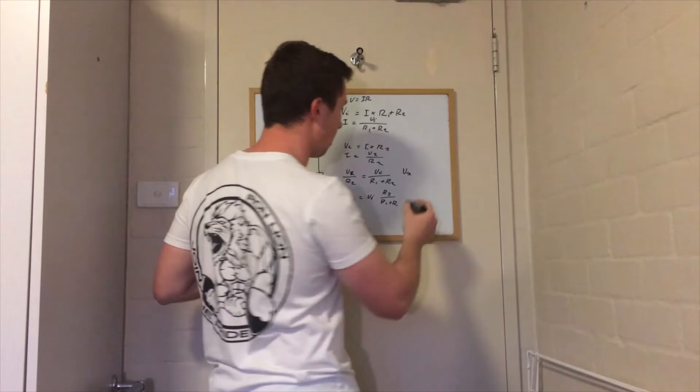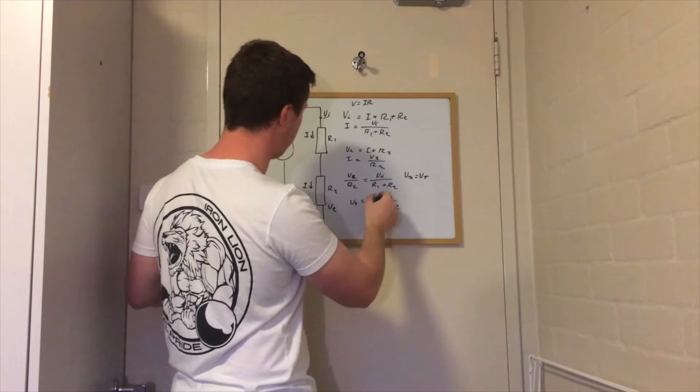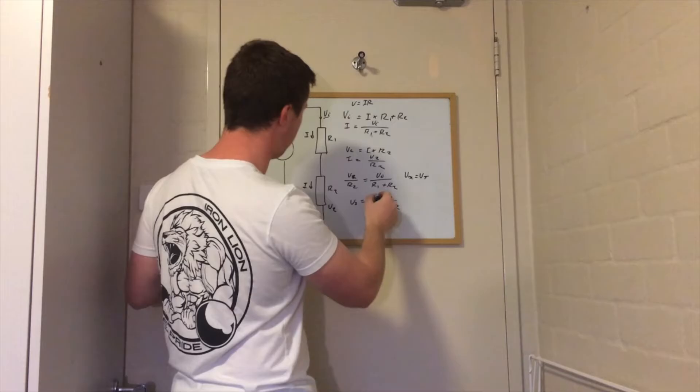Looking at that and comparing it to the voltage divider rule, which states Vx (the voltage across any resistor that you're trying to find) equals the total voltage multiplied by the resistance value of that resistor, all over the total resistance. Thanks.